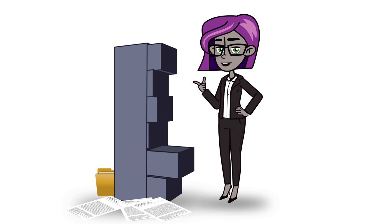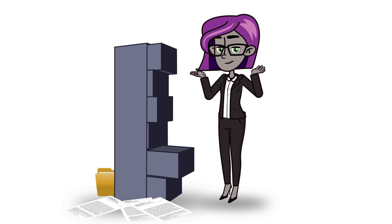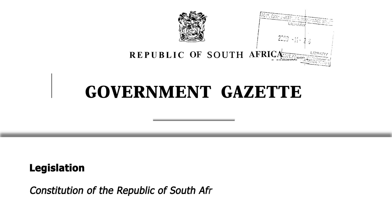It is important to note that the reference for the Constitution is different from ordinary Acts. In the case of the Constitution, the number of the Act — which is 108 — is not mentioned in the reference entry, because of the supreme law status of the Constitution in South Africa. So, just insert a comma after Africa, followed by the year 1996.